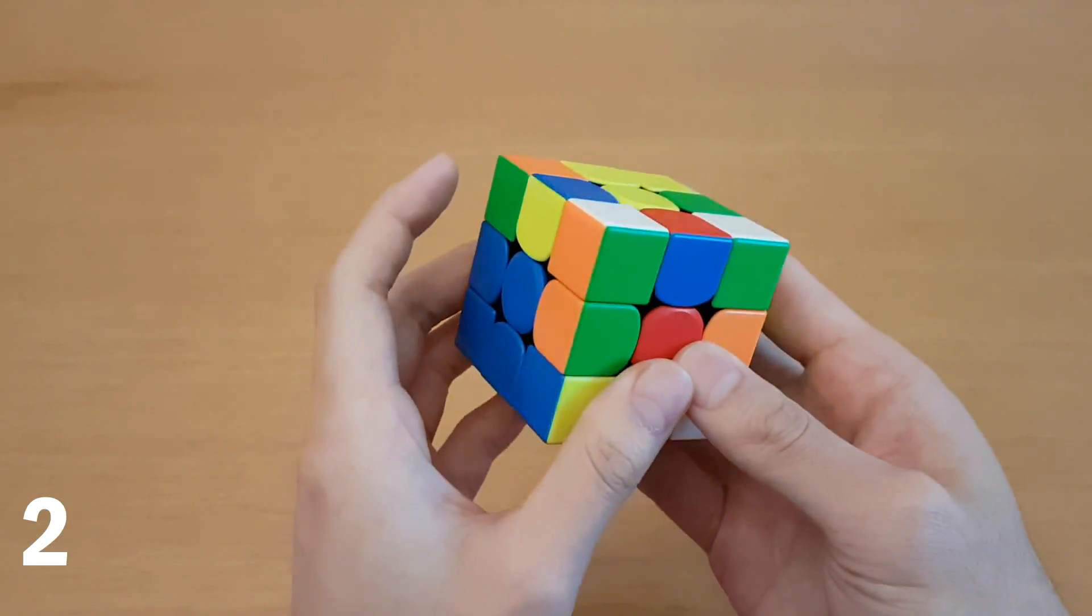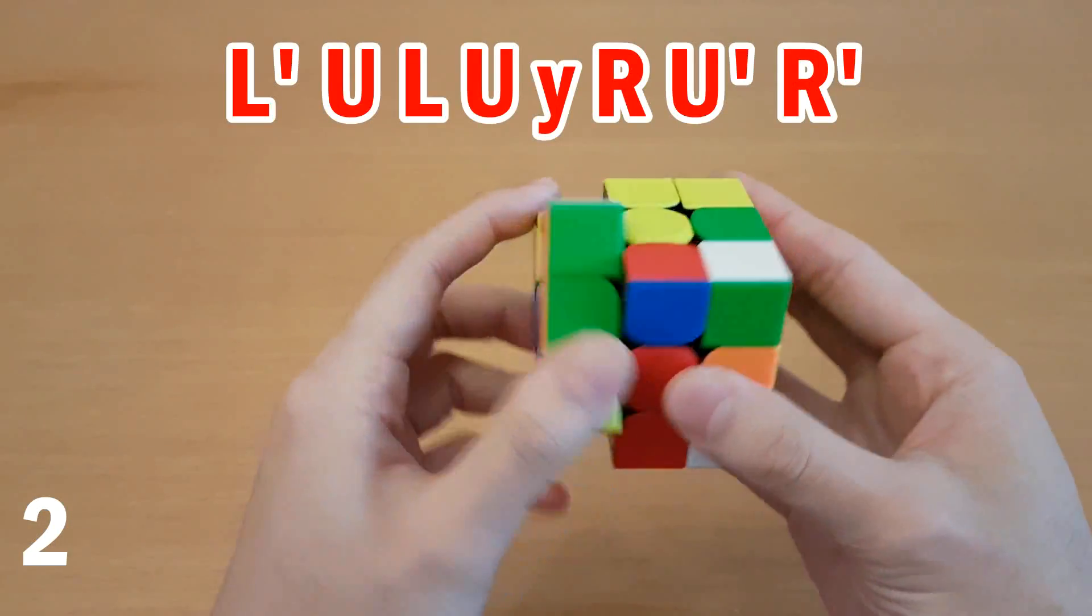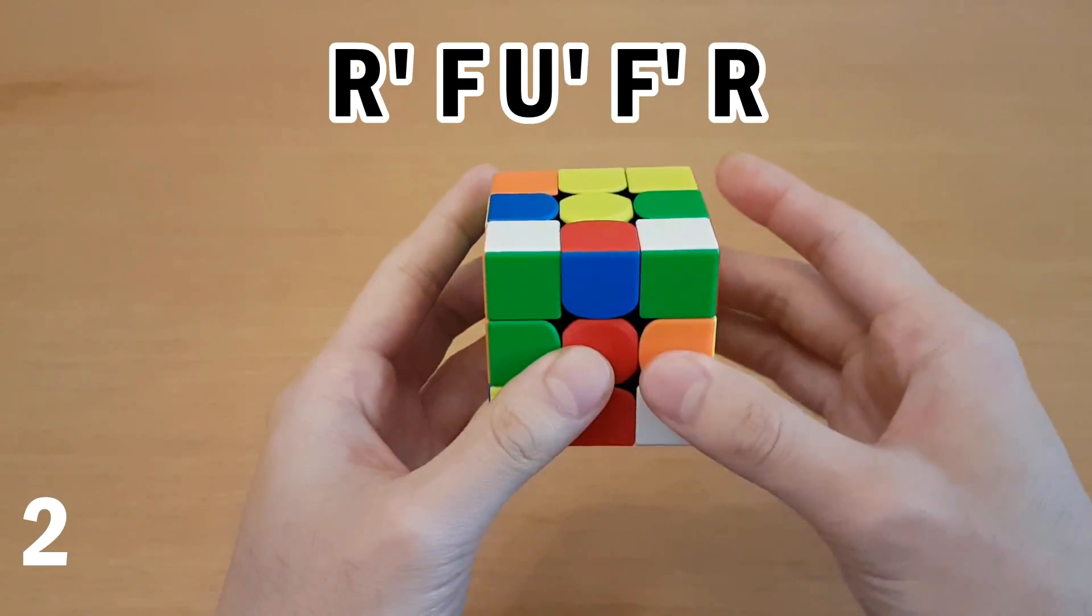If you have this pair that needs to go into the opposite slot, it looks obvious, you can just take it out, but you can do it faster like this.